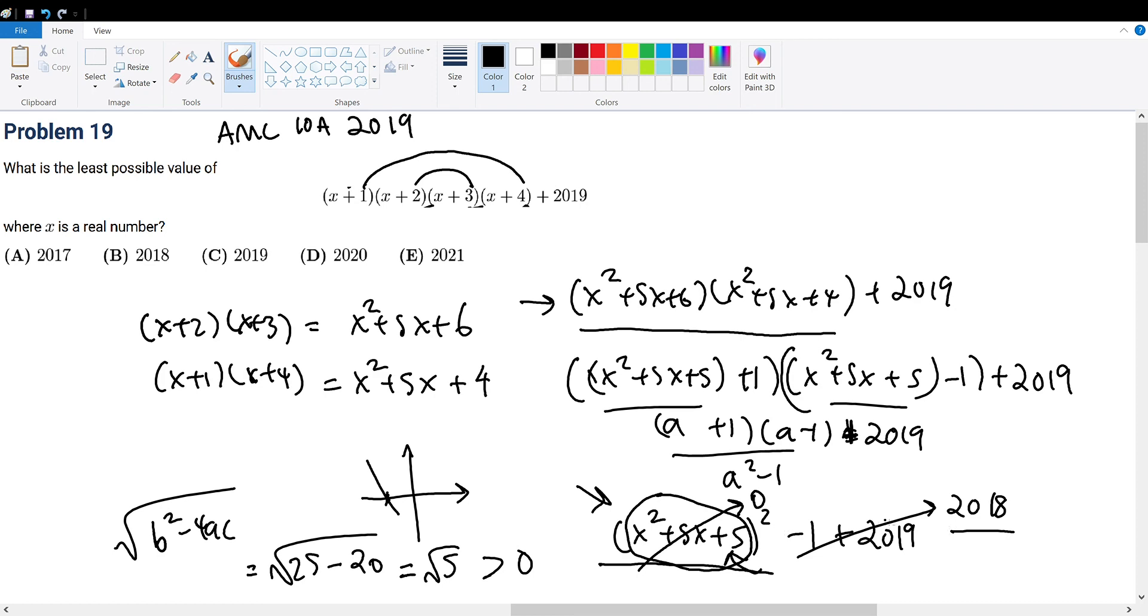And 0 plus 2018 will give us 2018. So the answer will be choice B, not choice C.